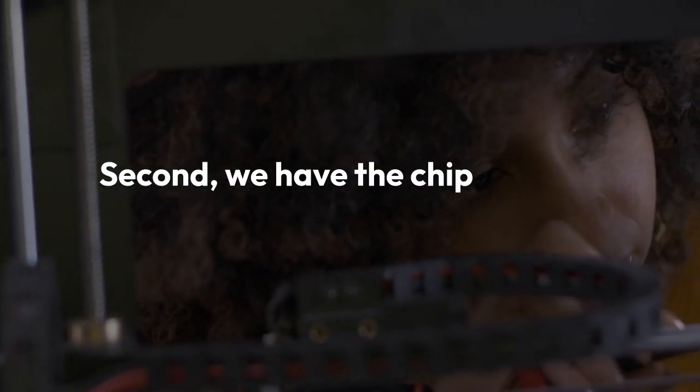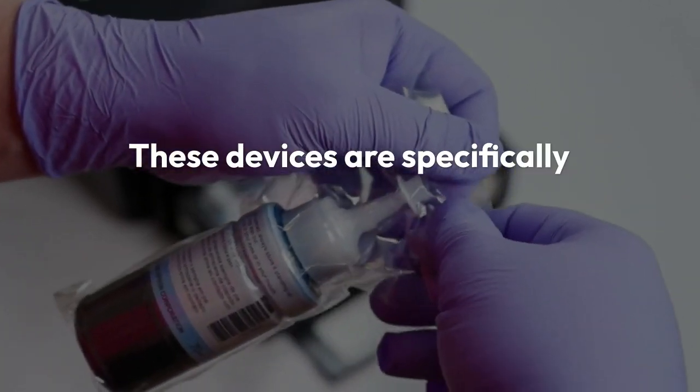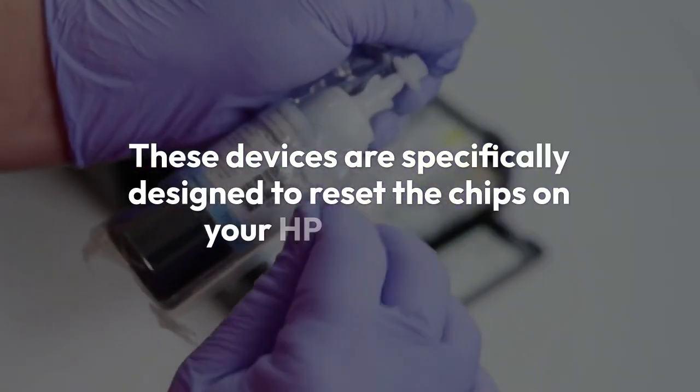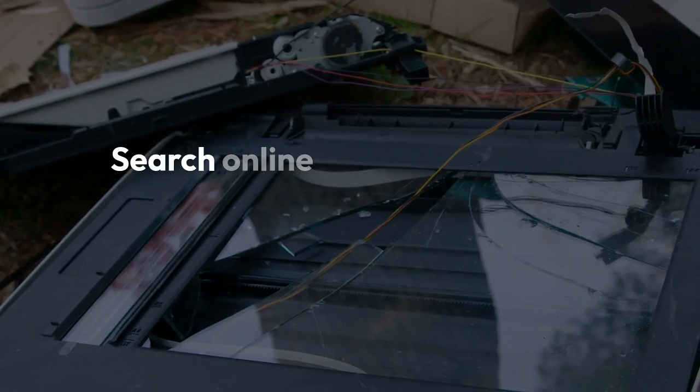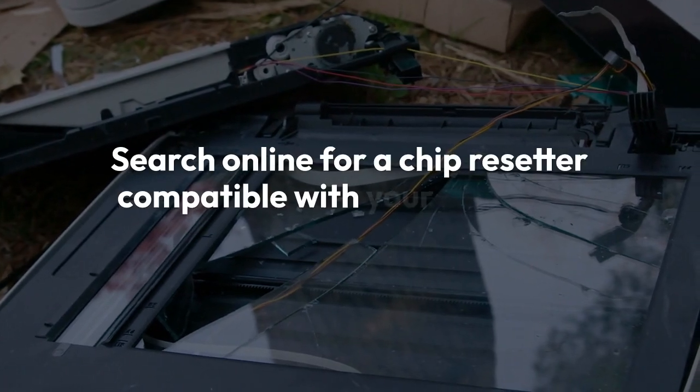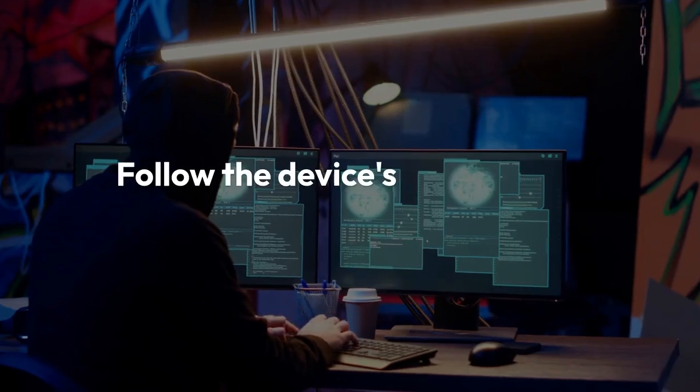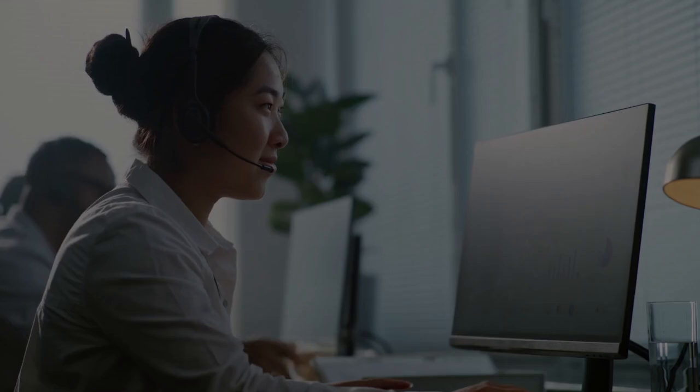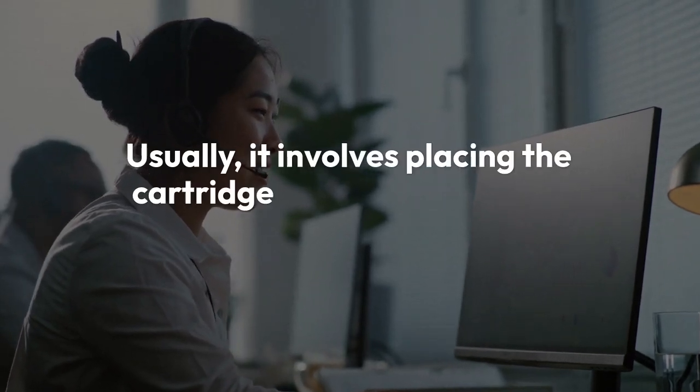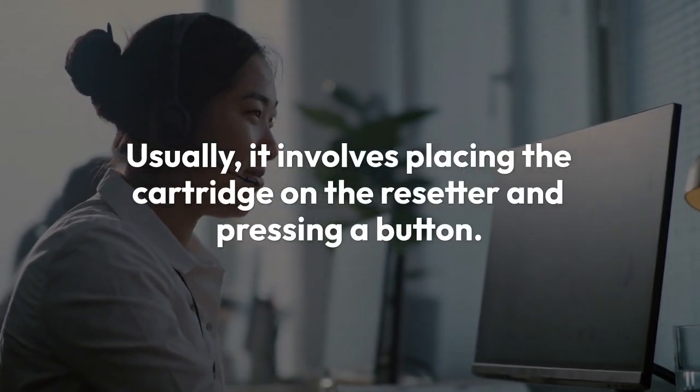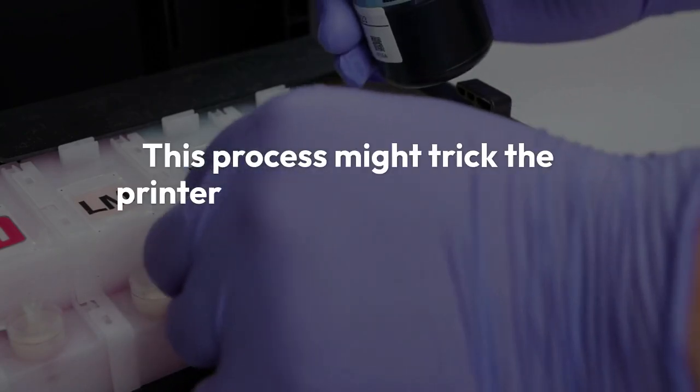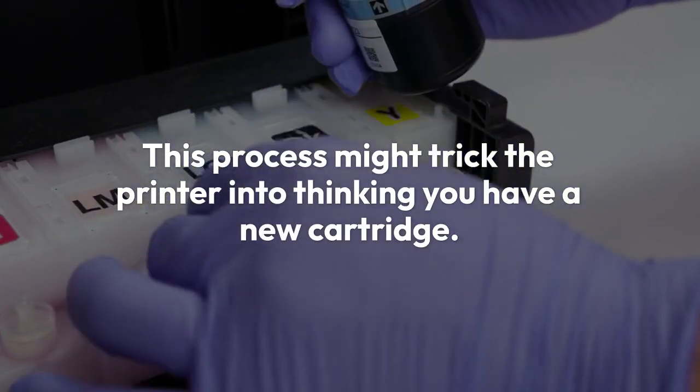Second, we have the chip resetter option. These devices are specifically designed to reset the chips on your HP cartridges. Search online for a chip resetter compatible with your cartridge model. Follow the device's instructions carefully. Usually it involves placing the cartridge on the resetter and pressing a button. This process might trick the printer into thinking you have a new cartridge.